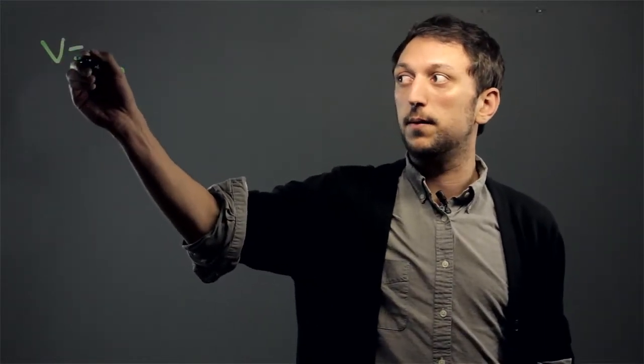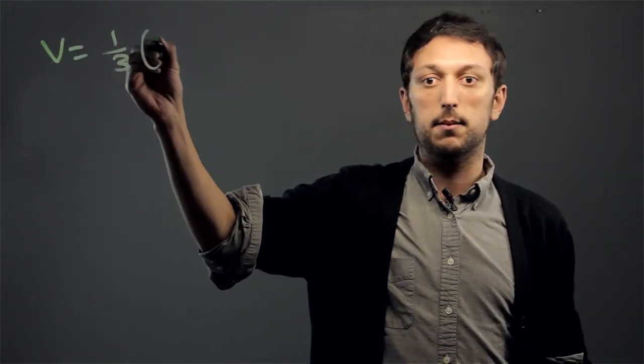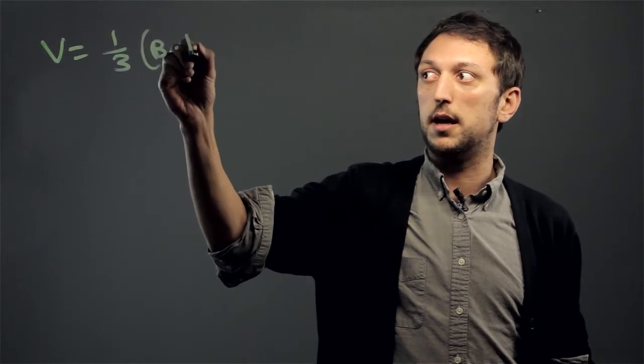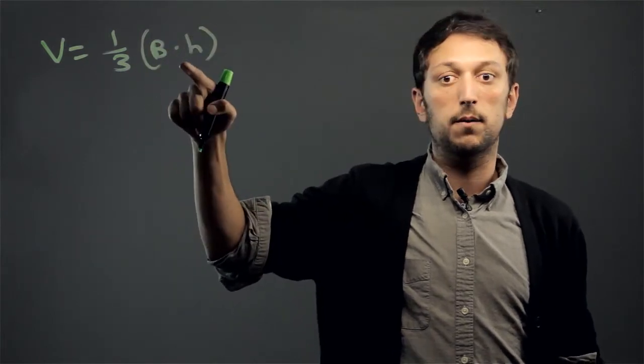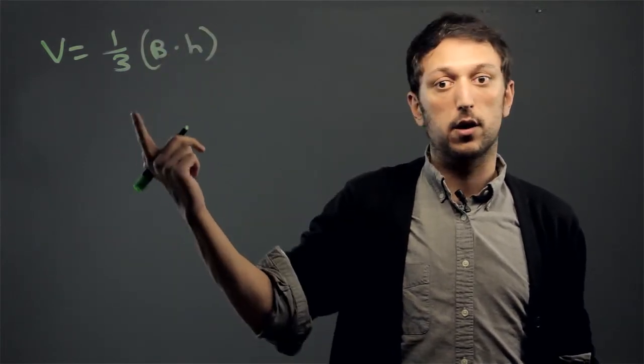First, you have to find the volume of your first pyramid. The volume for any pyramid is V equals one-third times the square base times the height. We have to figure out what our measurements are.